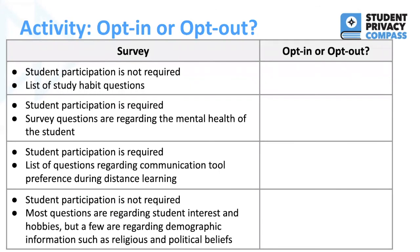Now we'd like you to participate in this activity. We've listed out four different survey scenarios indicating whether or not student participation is required, and we also provide some detail about the types of questions found in each survey to help you assess whether sensitive information will be revealed. Using this information, decide whether you should provide parents with an opt-in or opt-out. Feel free to use the table provided previously, and we will provide a guide key in the resources. Thank you for joining this training.